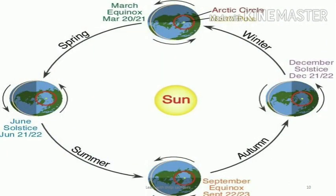Let us understand Solstice in a better way with the help of the given diagram. There are two kinds of Solstice: Summer Solstice, which appears in the month of June, and Winter Solstice, which appears in the month of December.